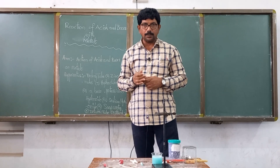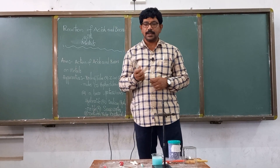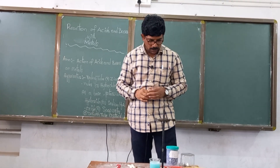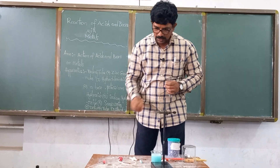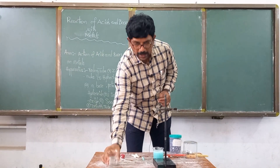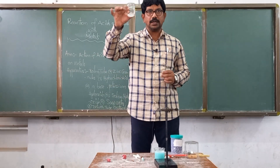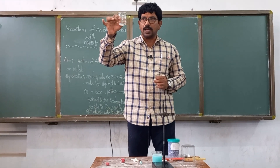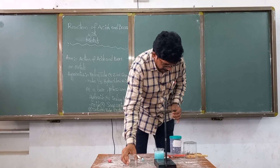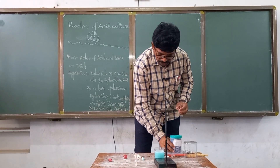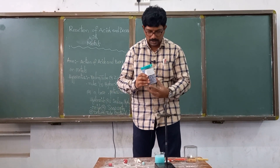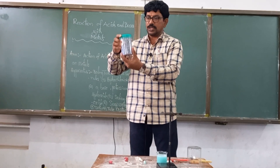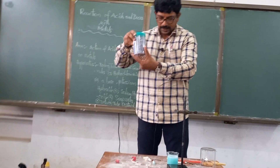For that, what are the materials needed? A boiling tube. Next, dilute hydrochloric acid or sulfuric acid — dilute hydrochloric acid. Next, zinc granules. These are the zinc granules.